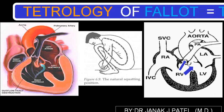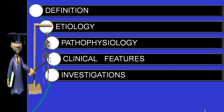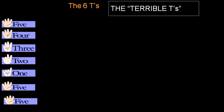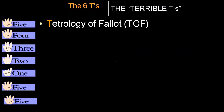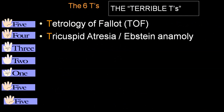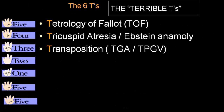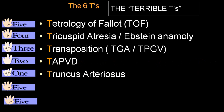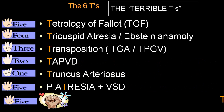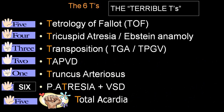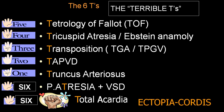Tetralogy of Fallot is a congenital cyanotic heart disease. There are a few congenital cyanotic heart diseases: the most common is Tetralogy of Fallot, then tricuspid atresia, Ebstein anomaly, transposition of great arteries, total anomalous pulmonary venous drainage, truncus arteriosus, pulmonary atresia with VSD, and ectopia cordis.